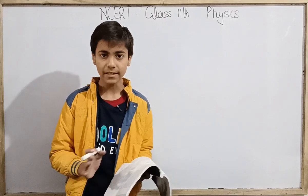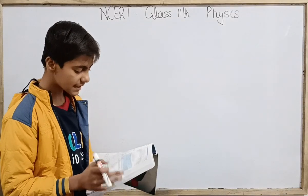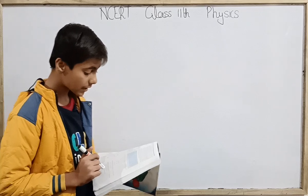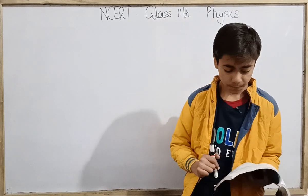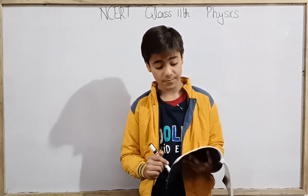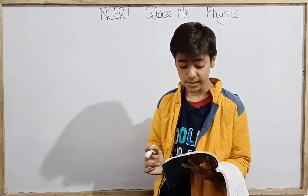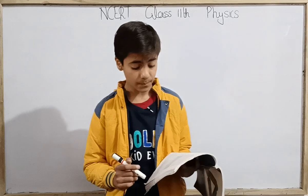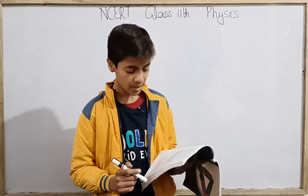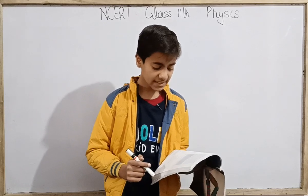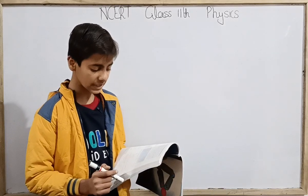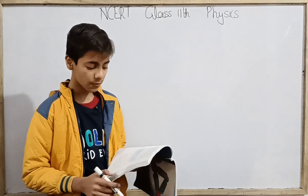This is a block whose mass is 1 kilogram fastened to a spring. The spring has a spring constant of 50 newton per meter. The block is pulled to a distance x equals 10 centimeter from its equilibrium position at x equals 0 on a frictionless surface from rest at t equals 0.